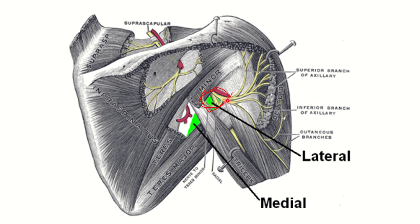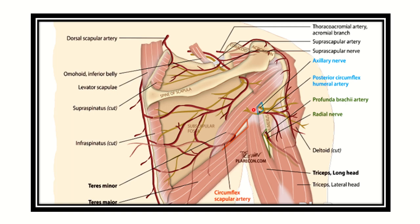We can see two important contents — one artery and one nerve. There is also a triangular space located just below the quadrangular space, which is also very important. The two structures passing through the quadrangular space are the axillary nerve and the posterior circumflex humeral artery.